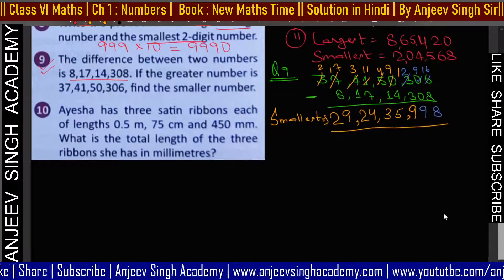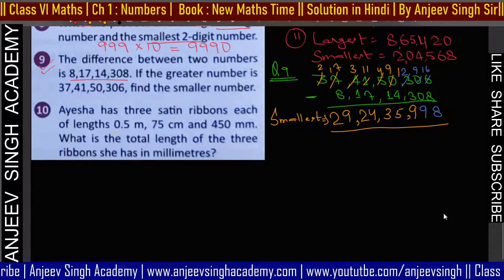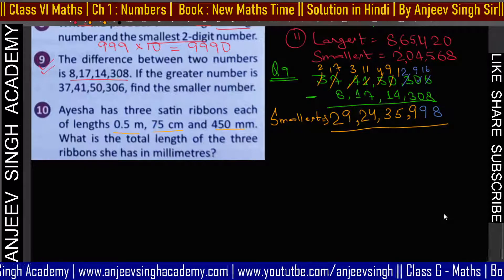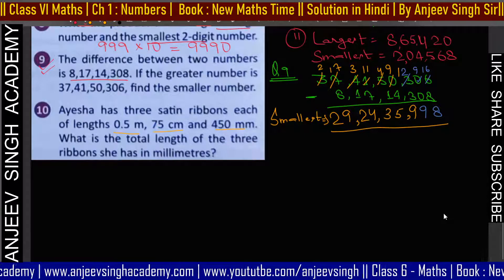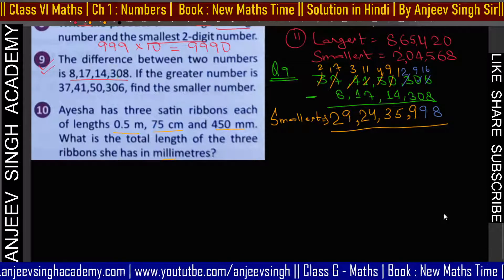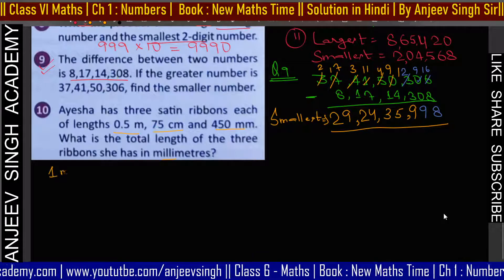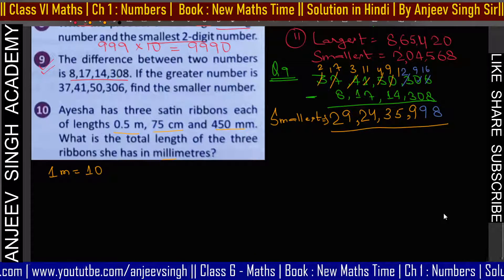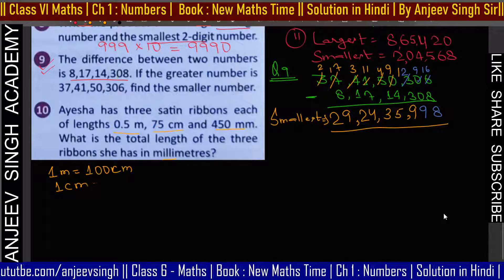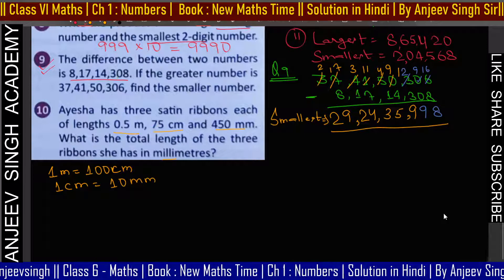Question number 10: Aisha के पास 3 satin ribbons हैं — lengths हैं 0.5 meter, 75 centimeter, और 450 millimeter। Total length in millimeters निकालनी है। पहले जानना होगा: 1 meter = 100 centimeter, 1 centimeter = 10 millimeter।